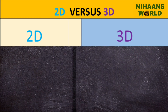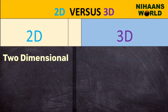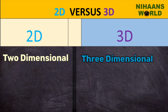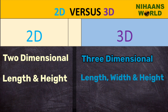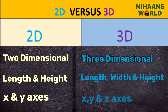2D shapes are two-dimensional. 3D shapes are three-dimensional. 2D shapes have length and height. 3D shapes have length, width and height. 2D shapes have x and y-axis. 3D shapes have x, y and z-axis.